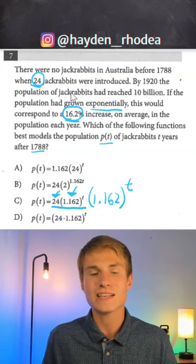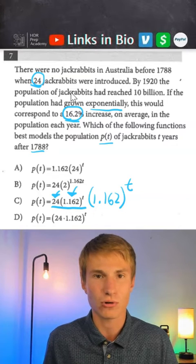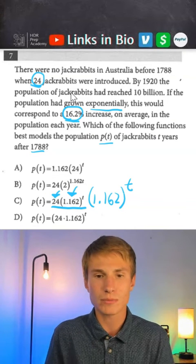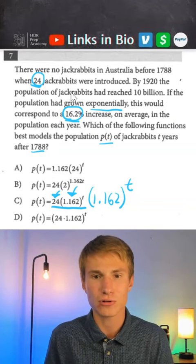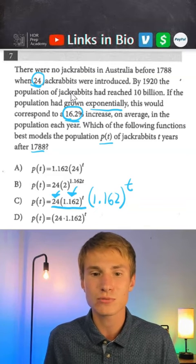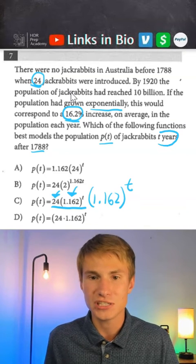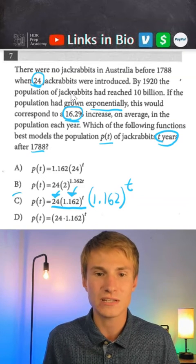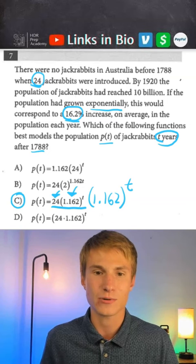Then the power that we're raising it to is how often we are increasing by that growth factor. So how often do we multiply our initial population by that growth factor? In this case, we know that we are increasing by 16.2% on average each year. Therefore, we need to raise it to the power T for each year after 1788. So our answer is going to be C.